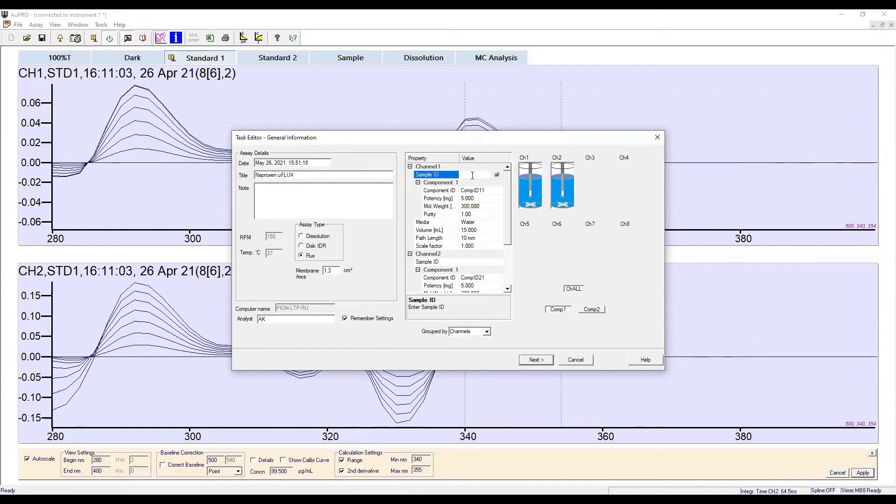On the right hand side, sample information is added. This includes the sample name, molecular weight, mass and chamber volume, as well as analytical details such as the path length of the UV probe.